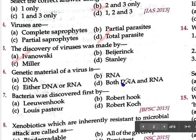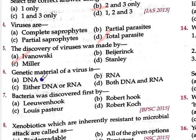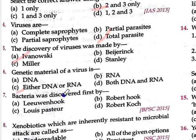Question number six: Genetic material of virus is — A: DNA, B: RNA, C: Either DNA or RNA, D: Both DNA and RNA. The correct answer is Option C — either DNA or RNA. Some viruses have DNA as genetic material and some have RNA as genetic material, but DNA and RNA are never both present together in a virus.